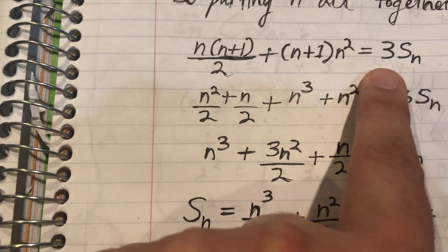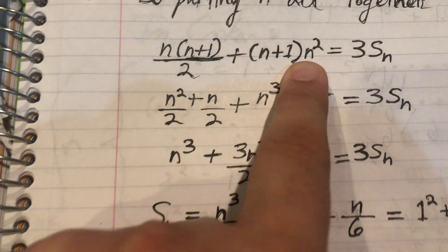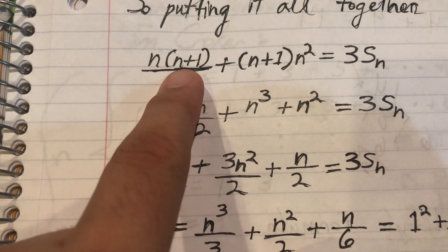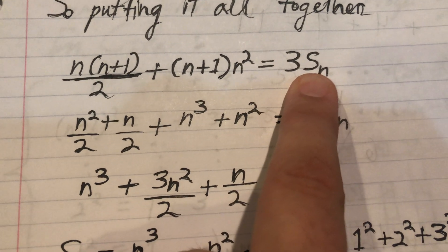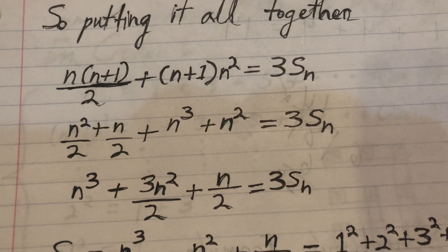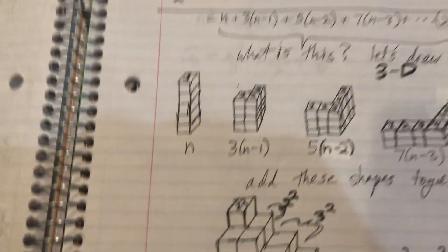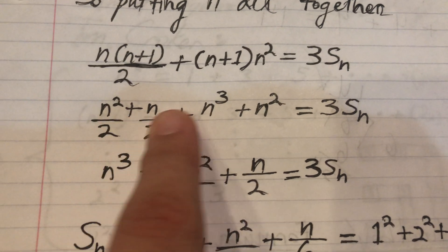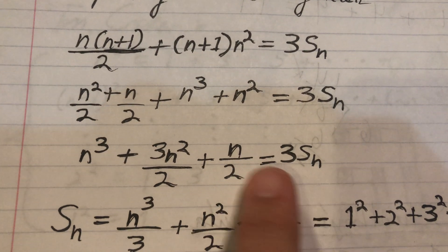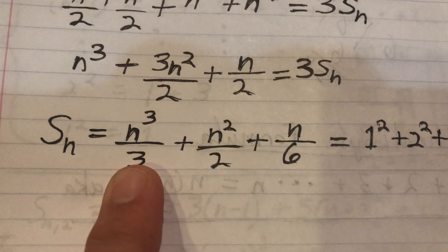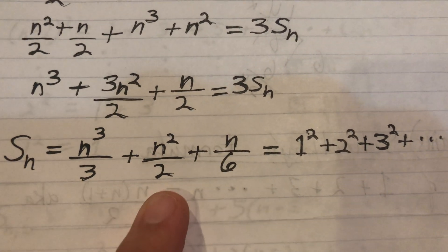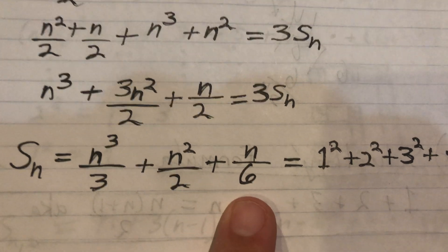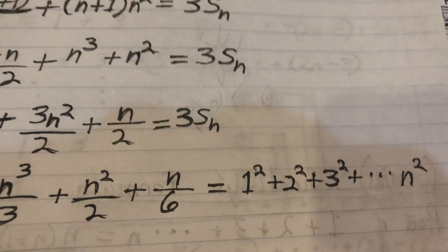Let's sum up what we have. We had n plus one n-squares, and Archimedes knew to add the Gauss sum to it, and that gives us three times the sum we're looking for. We had three of them: one from right here, and two more from these columns here. So we do the algebra on the left-hand side, and dividing through by three, we get n cubed over three plus n squared over two plus n over six — that's our formula.